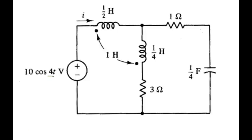So looking at the input, we conclude omega is 4 radians per second, so the phasor representation of our input is 10 at 0 degrees volts.